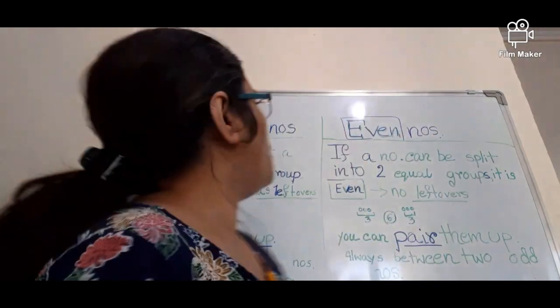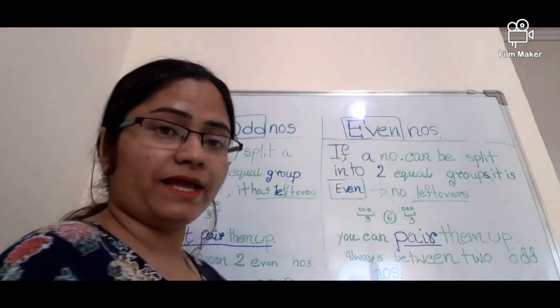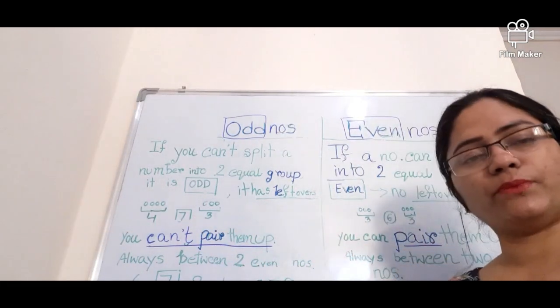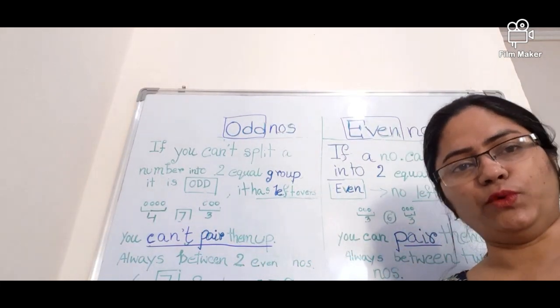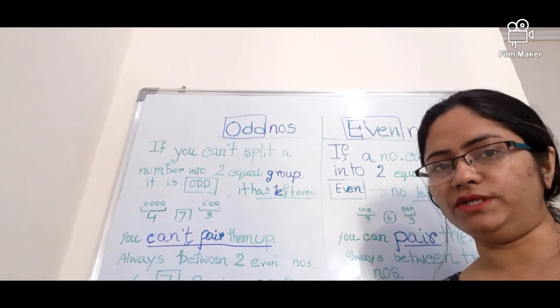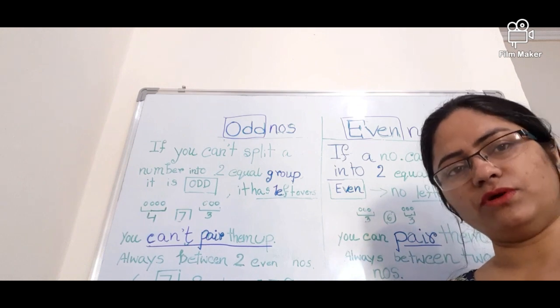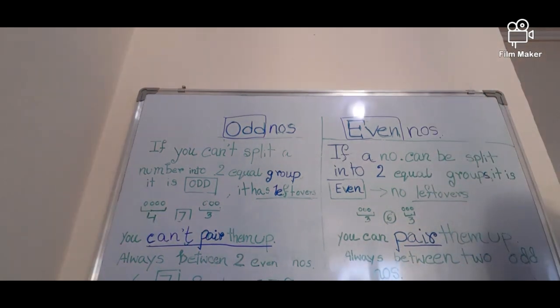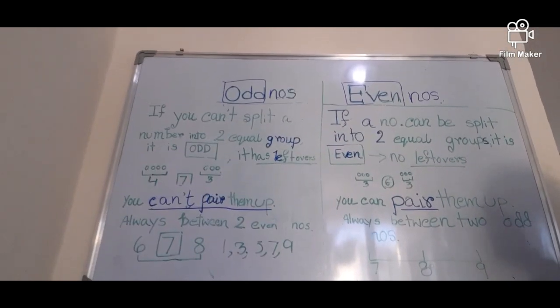Today's topic is odd numbers and even numbers. First, getting to the point — we have to know what is called an odd number and what is called an even number. In the case of odd numbers, if you can't split a number into two equal groups, it is called an odd number.